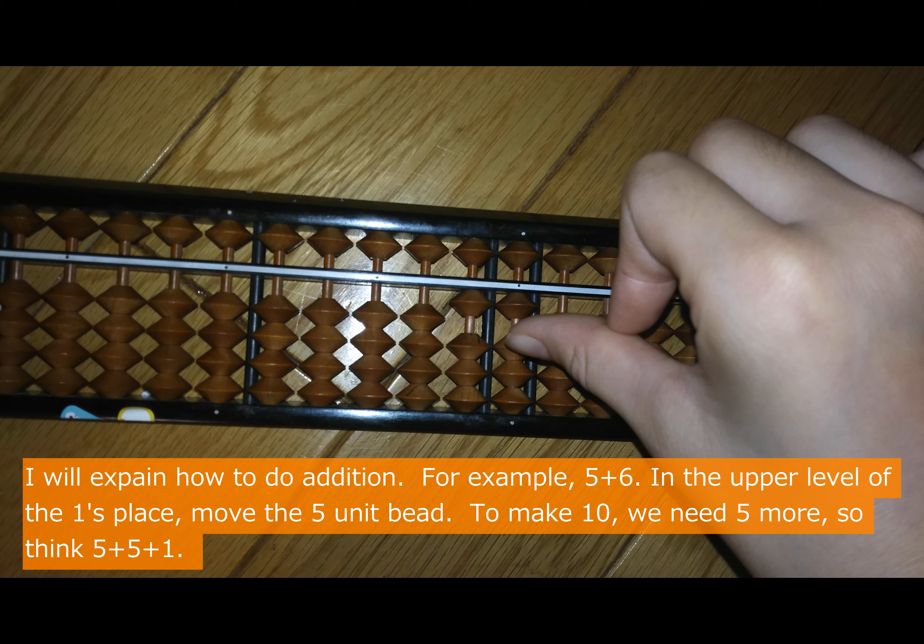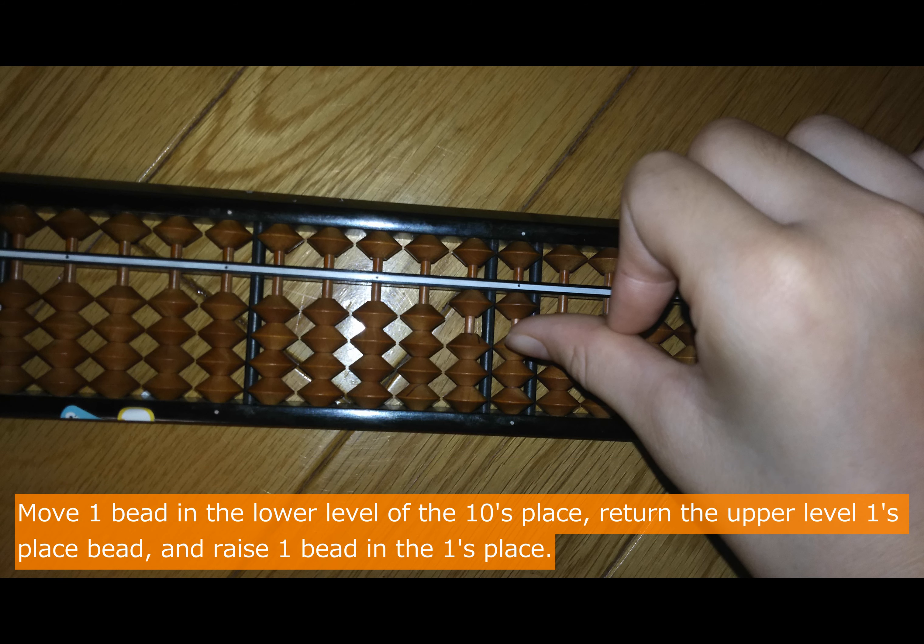I will explain how to do addition. For example, 5+6. In the upper level of the 1's place, move the 5 unit bead. To make 10, we need 5 more, so think 5+5+1. Move 1 bead in the lower level of the 10's place. Return the upper level 1's place bead and raise 1 bead in the 1's place.